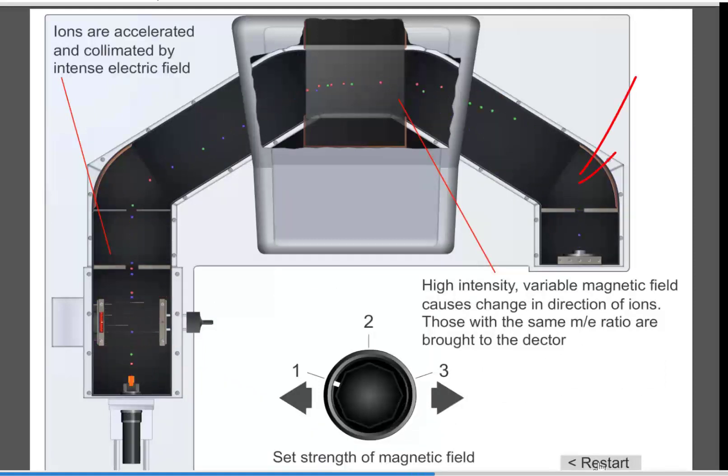Currently, the magnetic field is set so that the blue particles are deflected just sufficiently to be measured by the detector. Note, the green and red particles simply collide with the walls of the tunnel.